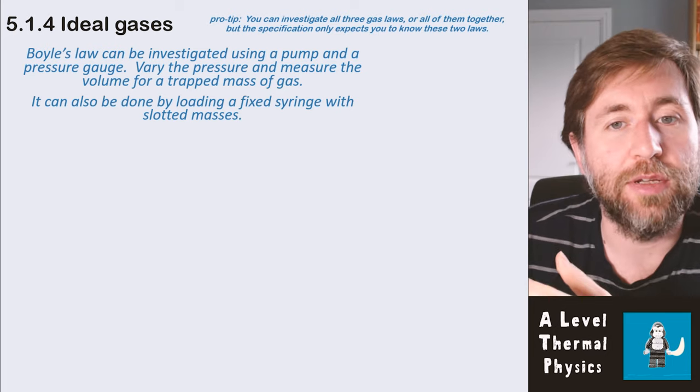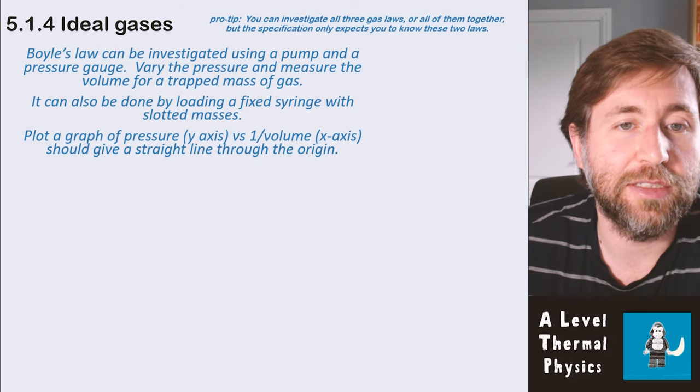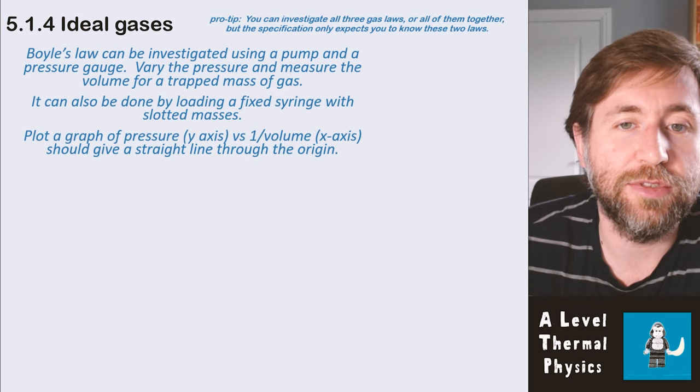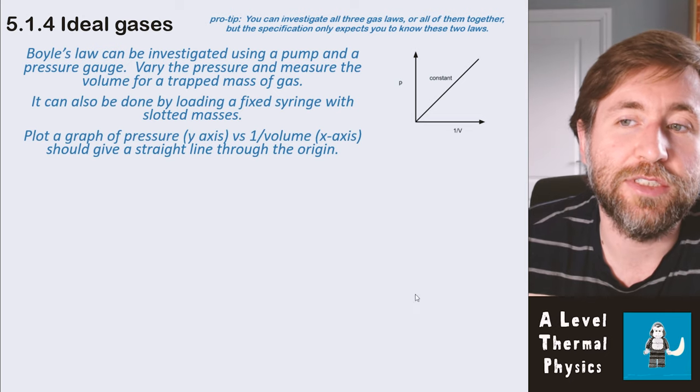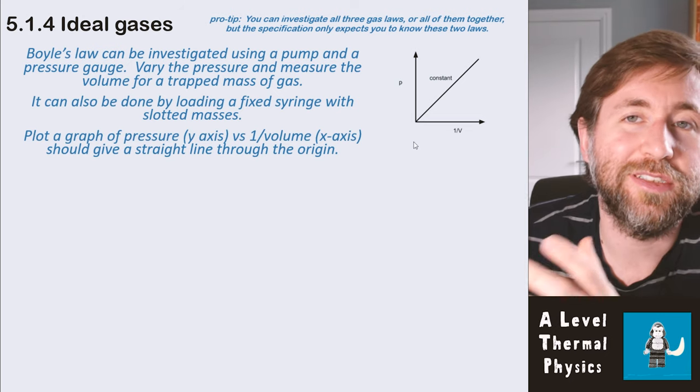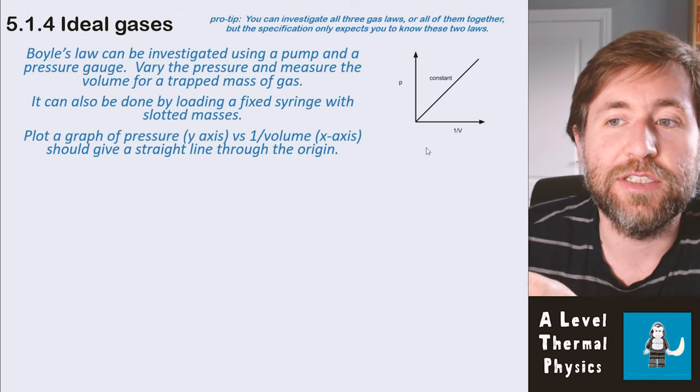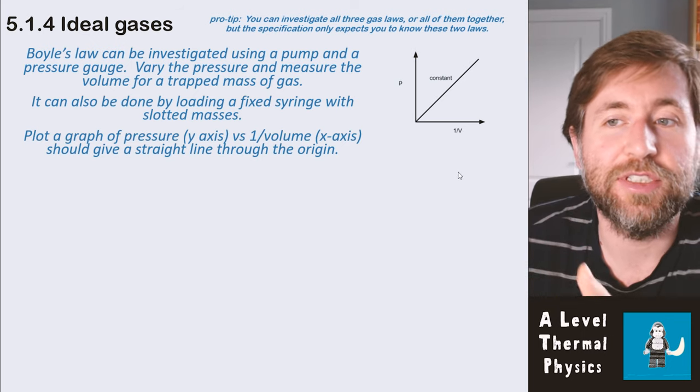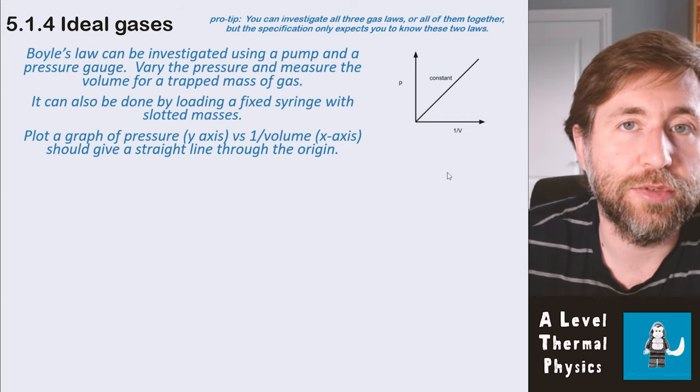So Boyle's law can be investigated using a pump and a pressure gauge, and you vary the pressure and you measure the volume of a trapped mass of gas. It's usually done with a fixed piece of apparatus that is just set up in your labs at school. But it can also be done by loading a fixed syringe with some slotted masses. So we increase the pressure by adding slotted masses, and we use force over area of the syringe to give us a pressure. You plot a graph of pressure on the y-axis versus one over volume.